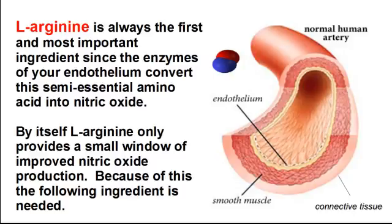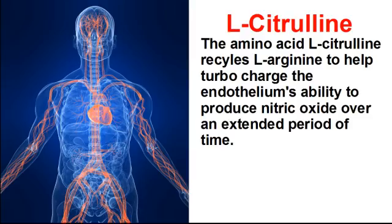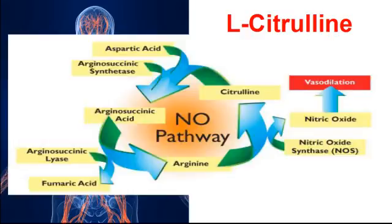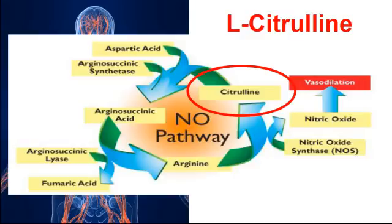Because of this, the following ingredient is needed. The amino acid L-citrulline recycles L-arginine to help turbocharge the endothelium's ability to produce nitric oxide over an extended period of time. Here is the metabolic pathway, and as you can see by the red circle, L-citrulline is key to keeping this nitric oxide production going.